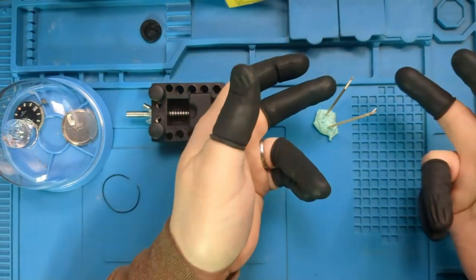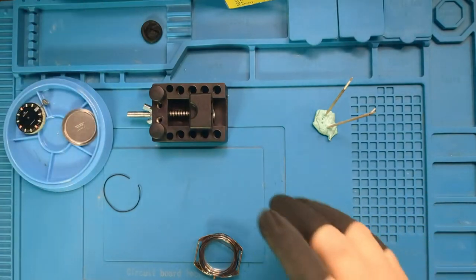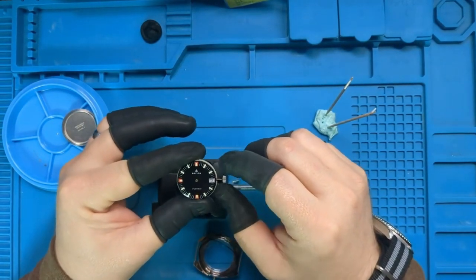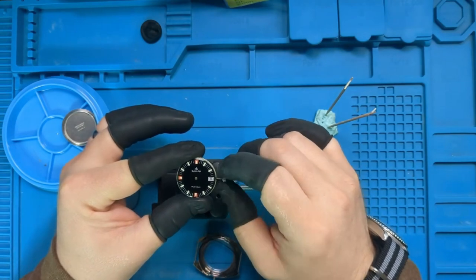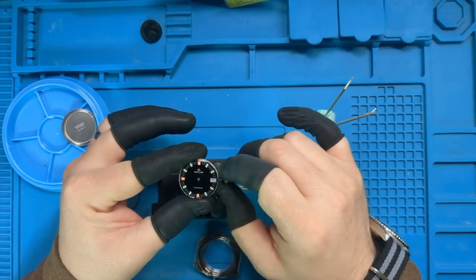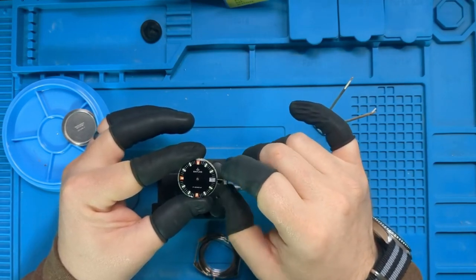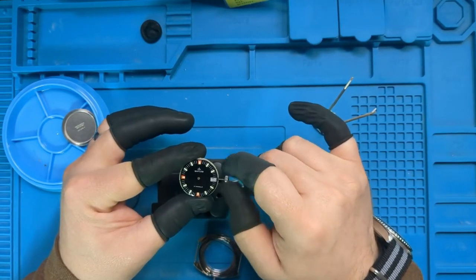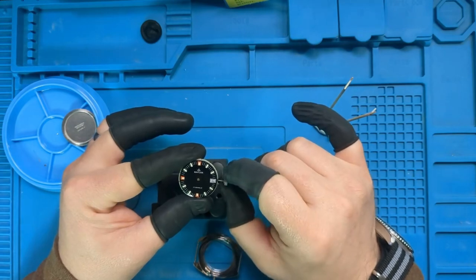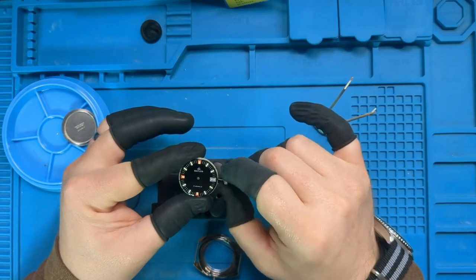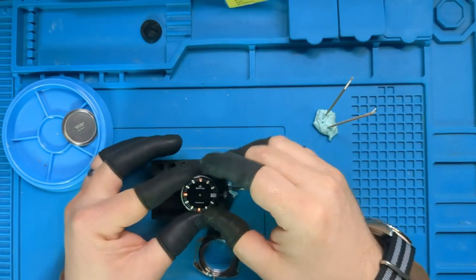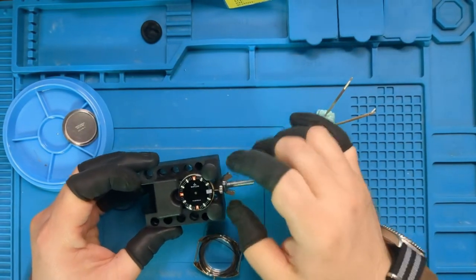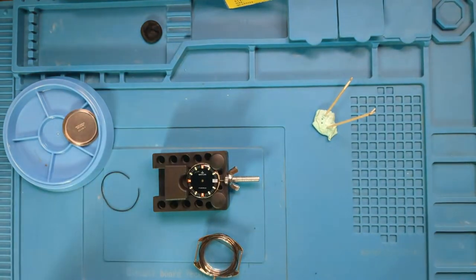All right, well it's been 24 hours and our watch hands are dry, so the next step is to put our movement back in position. But what I want to do first is rotate around until we get to midnight again. There we go, now that we're at midnight.